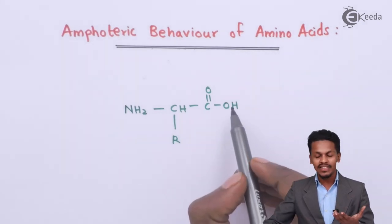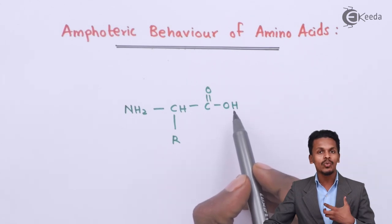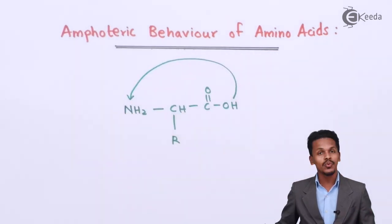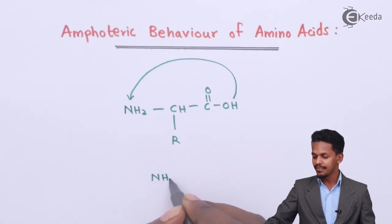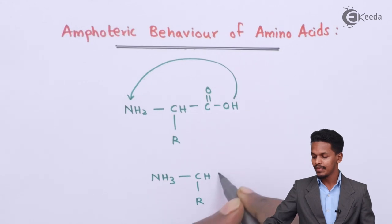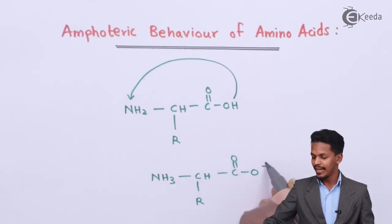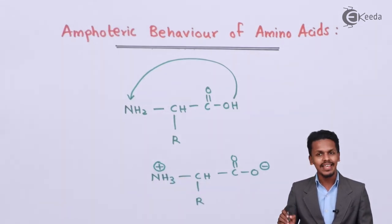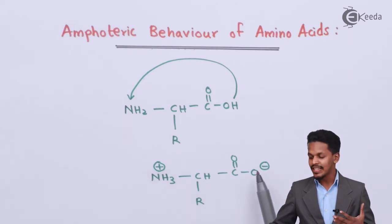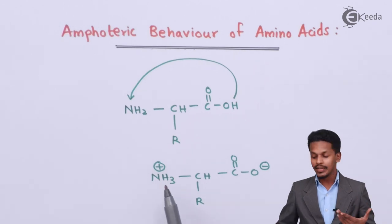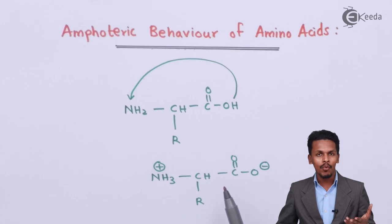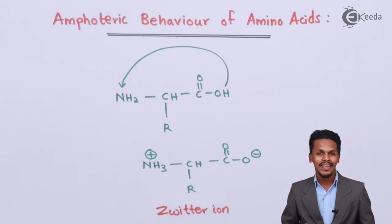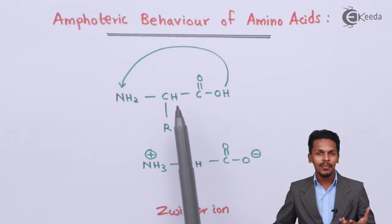Acids are components which have the tendency to give the H⁺ ion. The carboxylic acid group gives its proton to the NH₂ group to form ⁺NH₃-CHR-C(=O)-O⁻, with a positive charge on the nitrogen end. This component is dipolar in nature, having both a positive and a negative charge in the same molecule — such a molecule is known as a zwitterion.